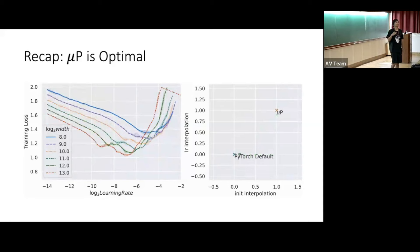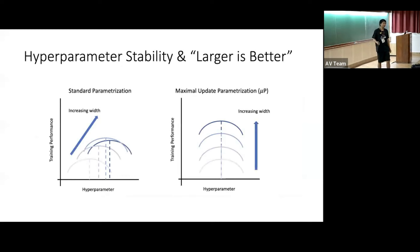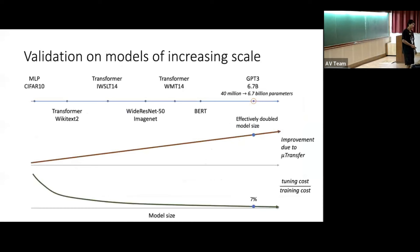Let's get back to topic and continue from a few days ago. I talked about this magical parameterization called Maximum Update, or μP parameterization, which has two properties that are really crucial for scaling large neural networks: the stability of optimal hyperparameters and the 'larger is better' property.